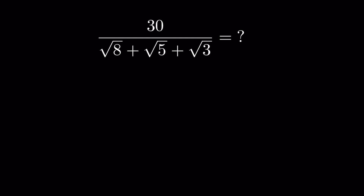30 upon square root of 8 plus square root of 5 plus square root of 3 — we have to simplify it.